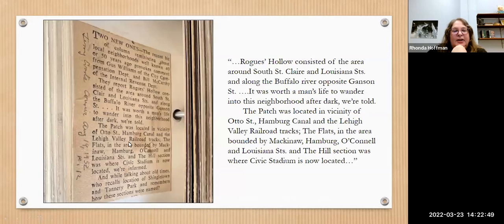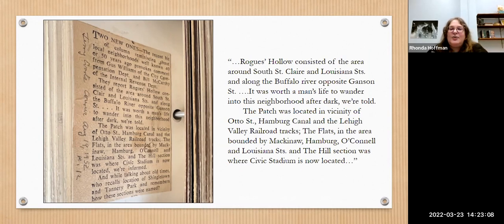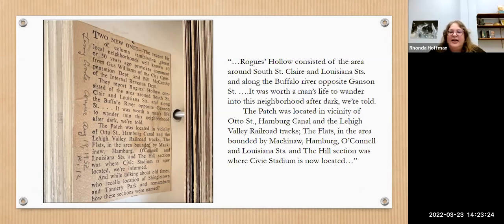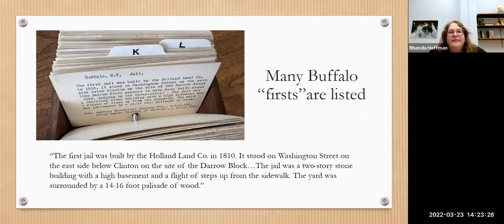Some of these cards have newspaper clippings on the back giving detail. For example: Rogues Hollow consisted of the area around South Clare and Louisiana Streets along the Buffalo River opposite Ganson Street — 'it was worth a man's life to wander into this neighborhood after dark.' The Patch was located near Otto Street, Hamburg Canal, and Lehigh Valley Railroad tracks. The Flats were bounded by Mackinac, Hamburg, O'Connell, and Louisiana Streets. The Buffalo file is also very good for Buffalo firsts — the first jail was built by the Holland Land Company in 1810 on Washington Street.